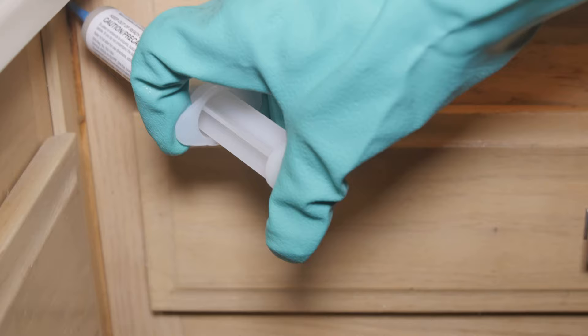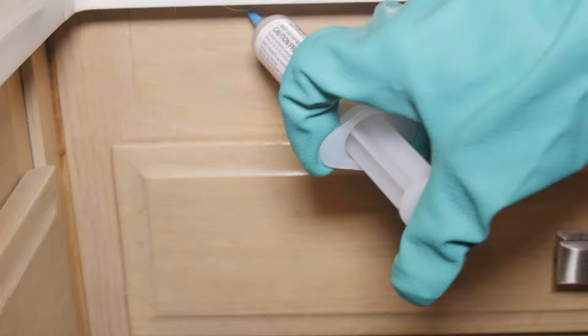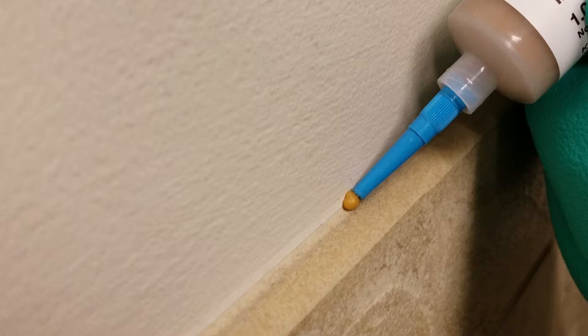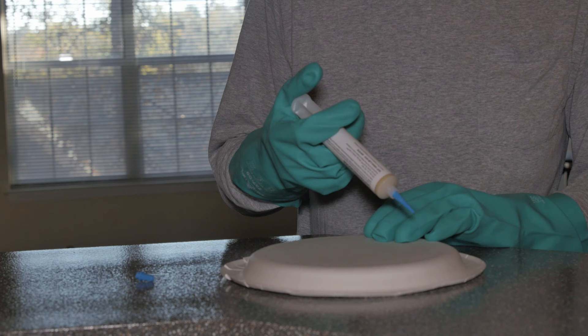Roaches have small mouth parts and look for small crumbs of food. When applying roach bait gel, remember to apply many small spots of gel instead of one or two large spots. Roaches will mistake the small spots of gel for crumbs they can eat. Make each spot no larger than a small pea.